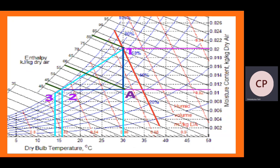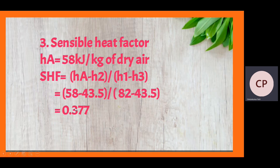Finally, we calculate the sensible heat factor (SHF). From the chart, the enthalpy at point A, HA = 58 kJ/kg of dry air. The SHF formula is: SHF = (HA − H2) / (H1 − H2) = (58 − 43.5) / (82 − 43.5) = 0.377. Thank you.